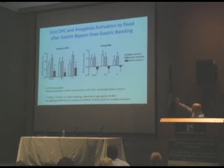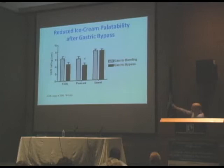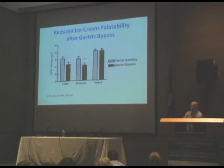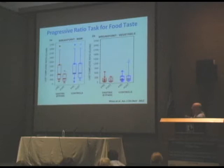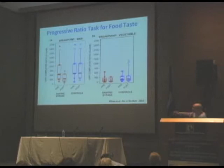In a region-of-interest analysis, we found that in the anterior orbitofrontal cortex, bypass patients had reduced activation compared to banding patients for both high- and low-calorie foods. Similarly, in the amygdala, which encodes emotional responses, we found reduced activation in bypass patients. When given ice cream, bypass patients also found it much less pleasant to eat — which may partly reflect a learned experience, as dumping syndrome symptom scores are higher in the bypass patients.